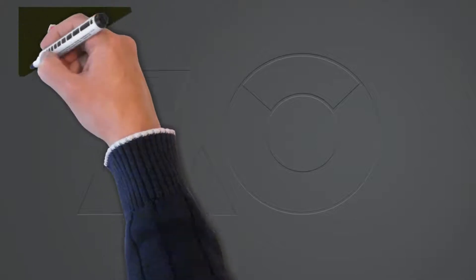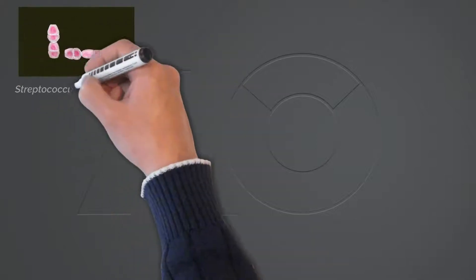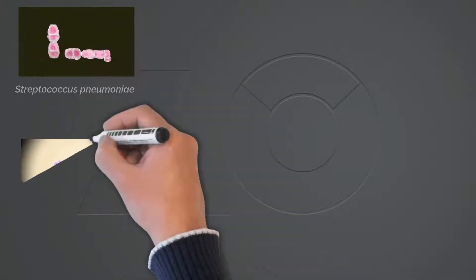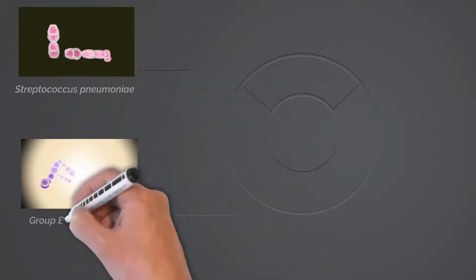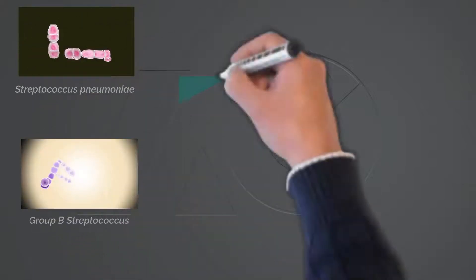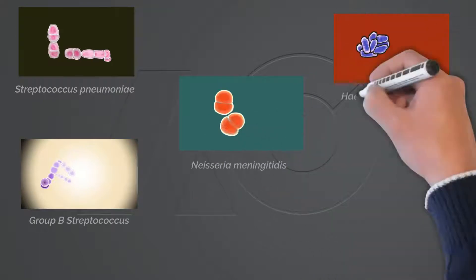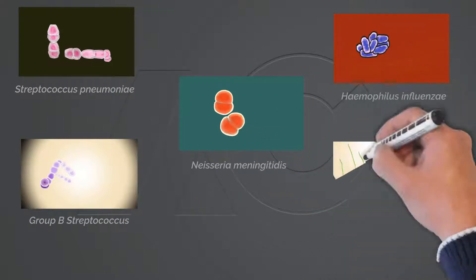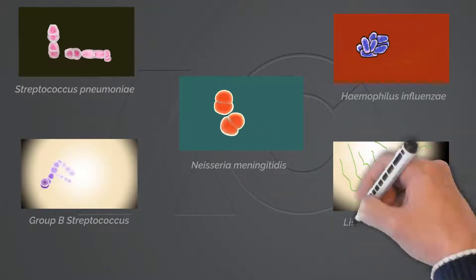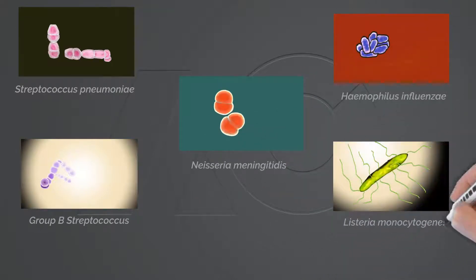The leading causes for bacterial meningitis in the United States are Streptococcus pneumoniae, Group B Streptococcus, Neisseria meningitidis, Haemophilus influenzae, and Listeria monocytogenes.